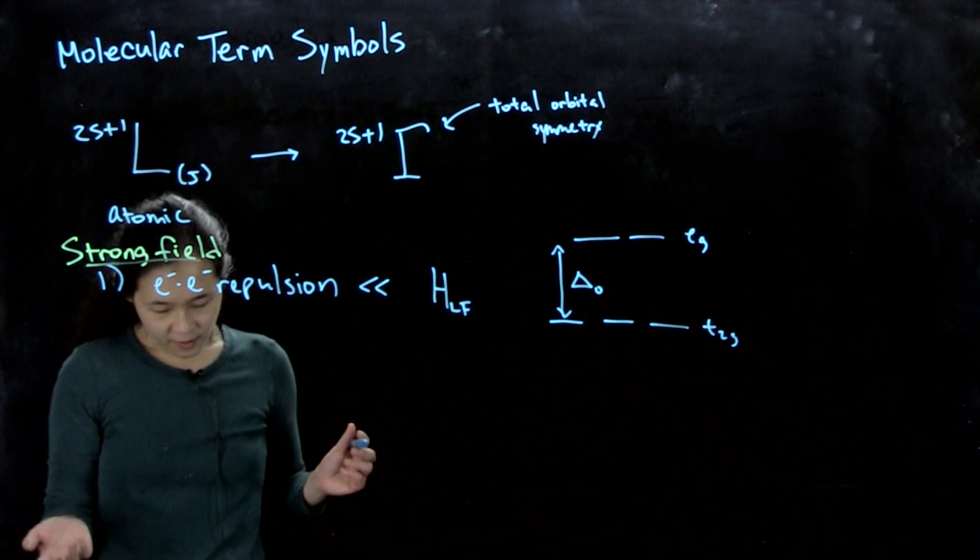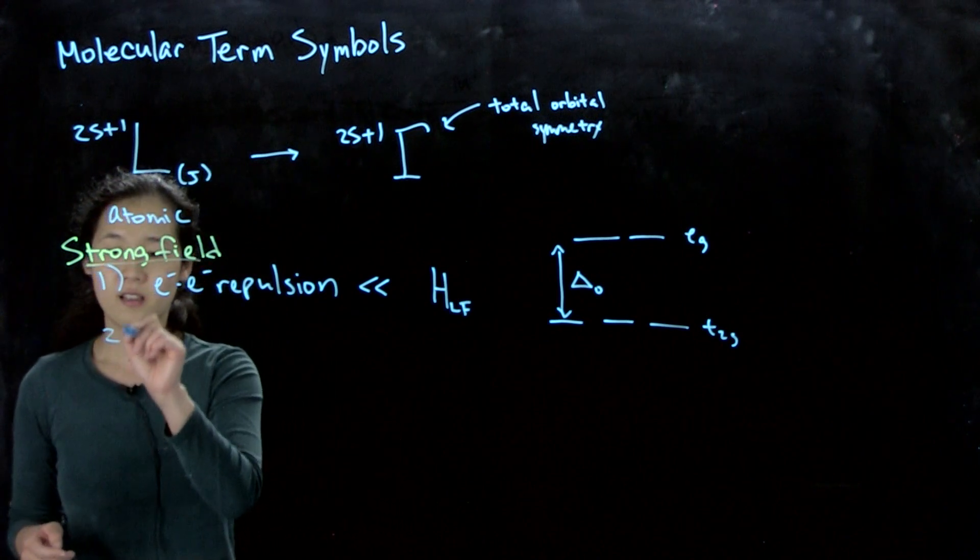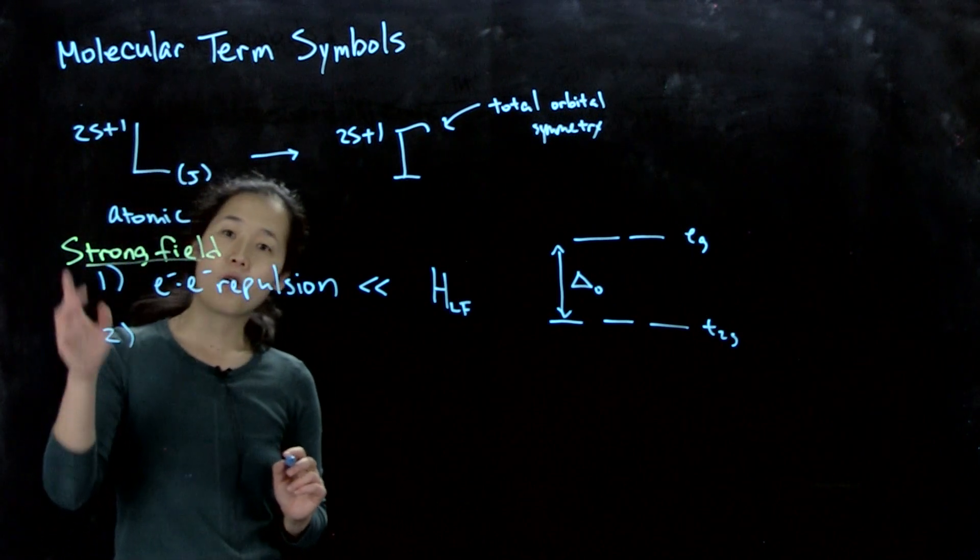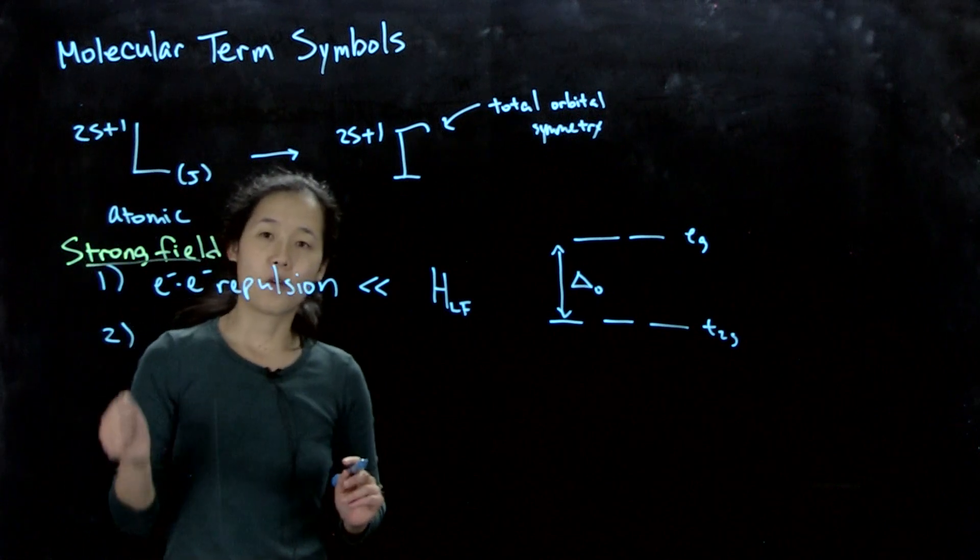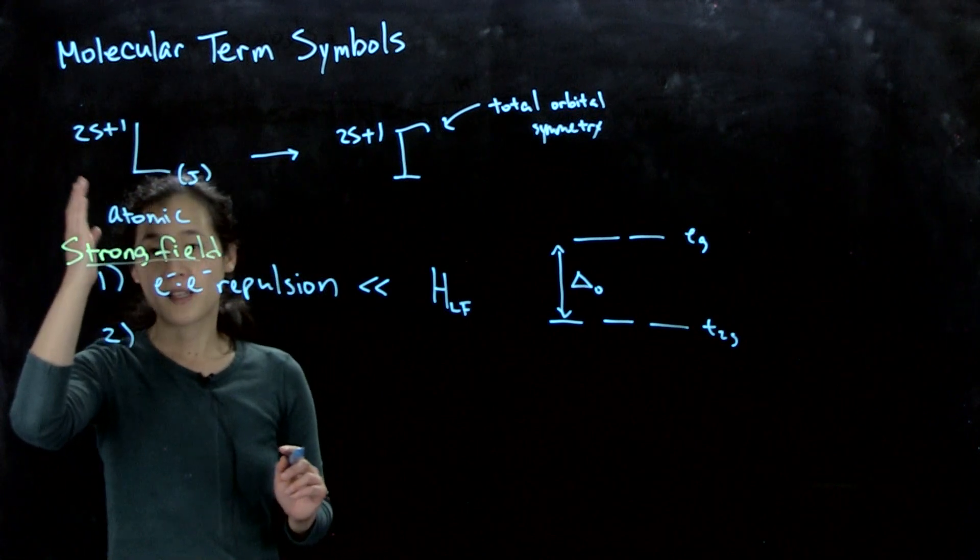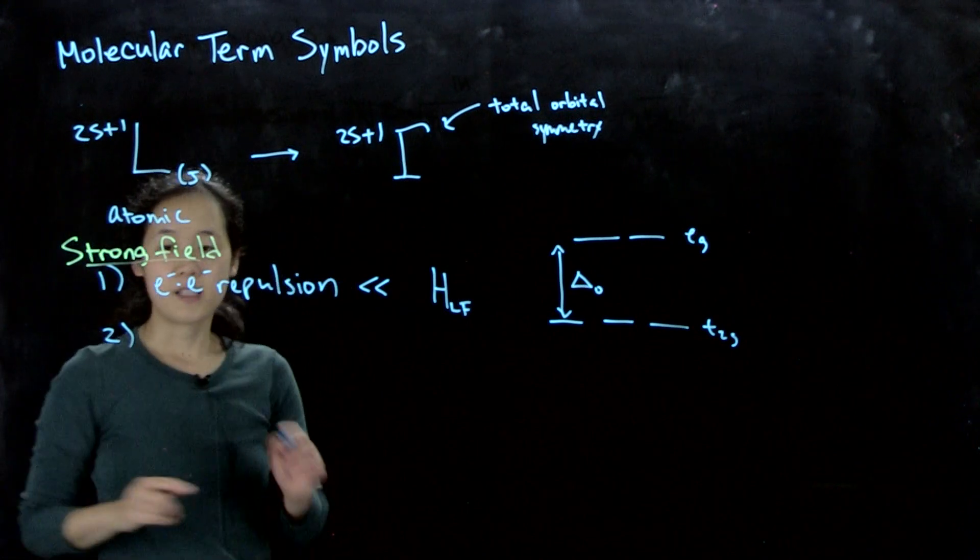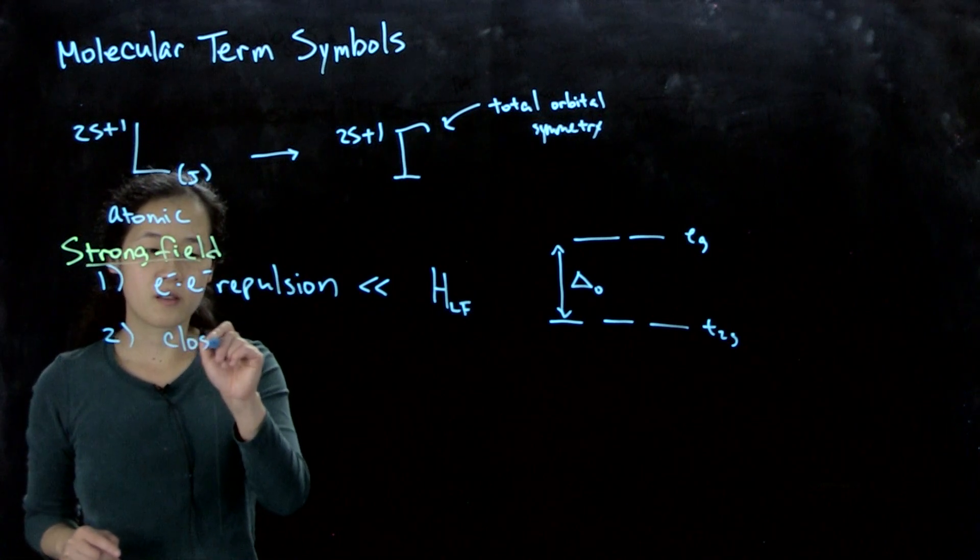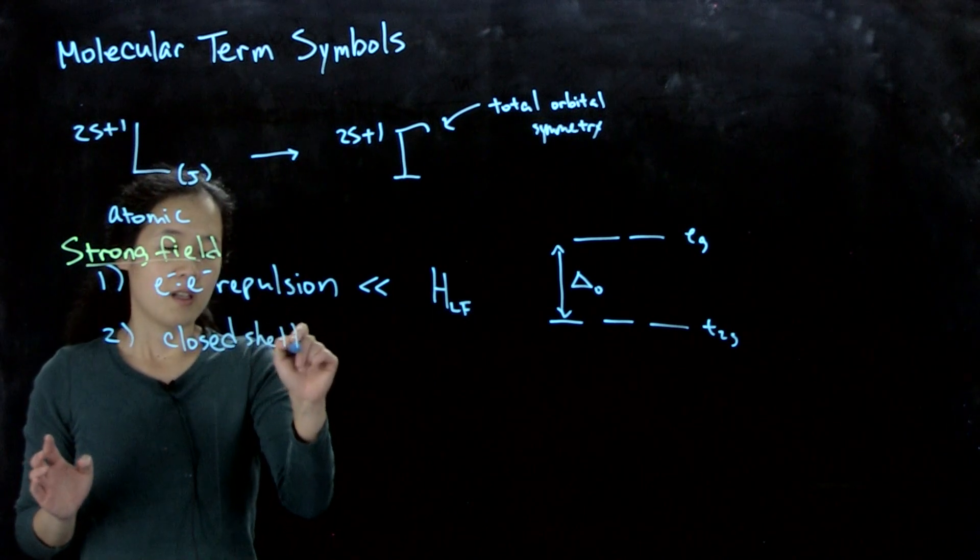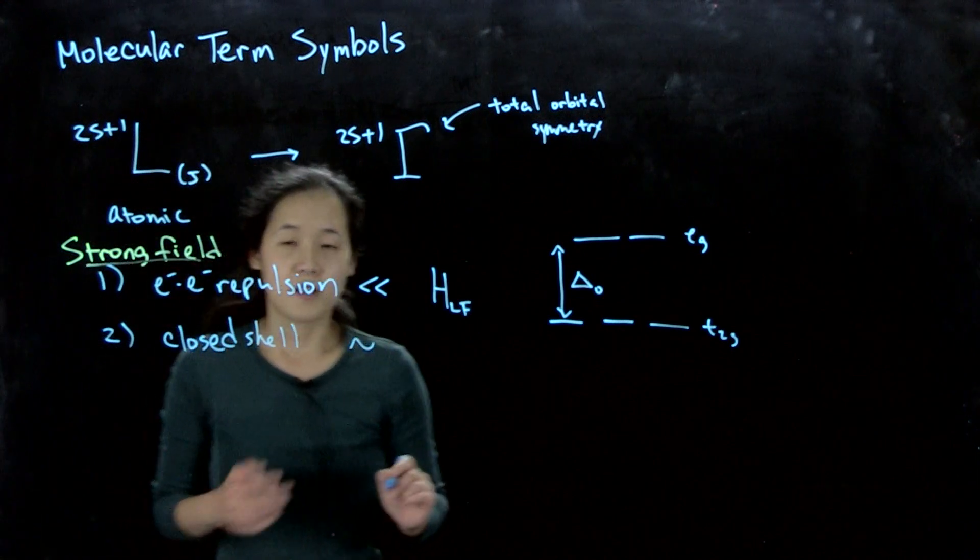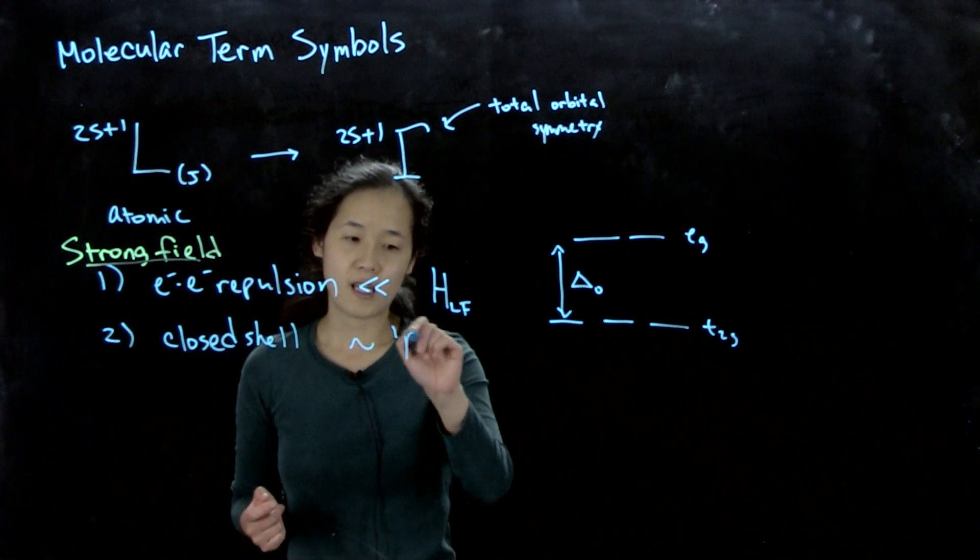And a couple other things to keep in mind is, we said that for a closed-shell system, for an atom, it was always singlet s. For a closed-shell system in a molecule, so all orbitals filled, this will correspond to singlet a1g.